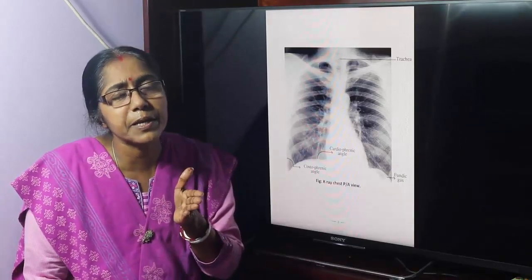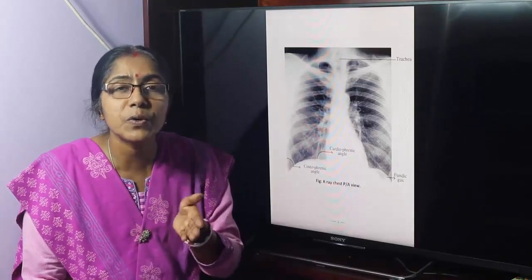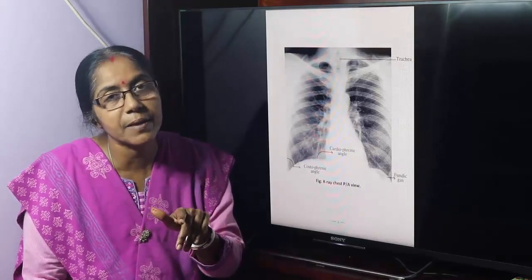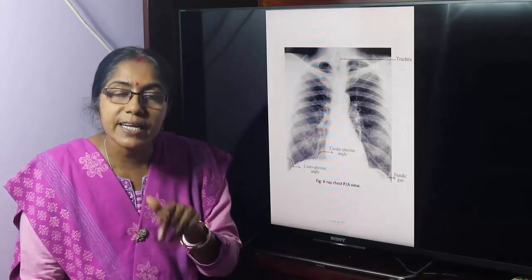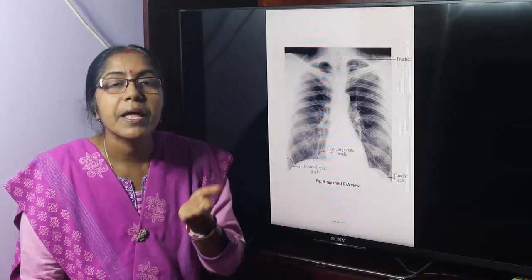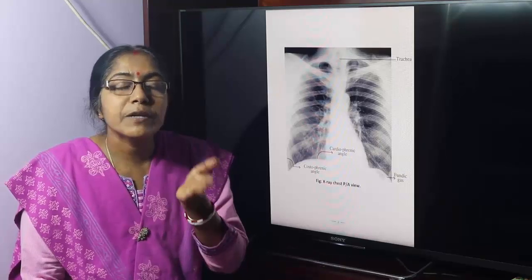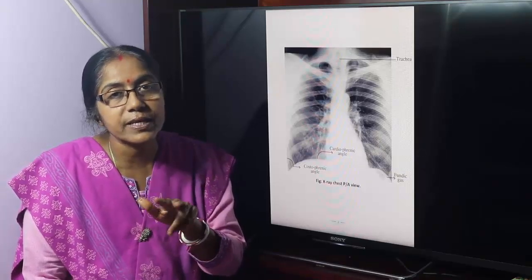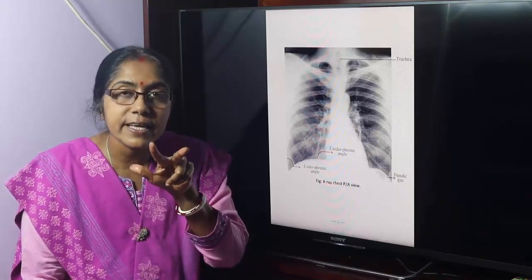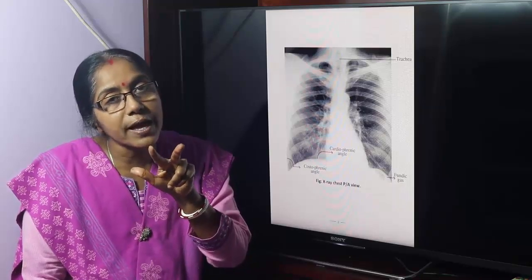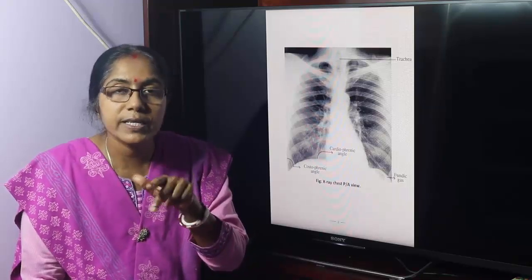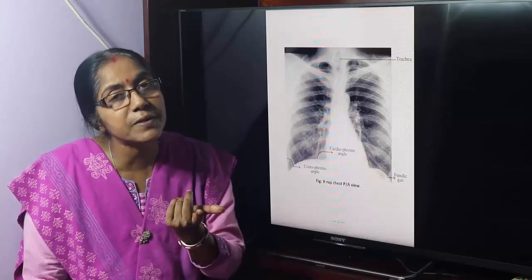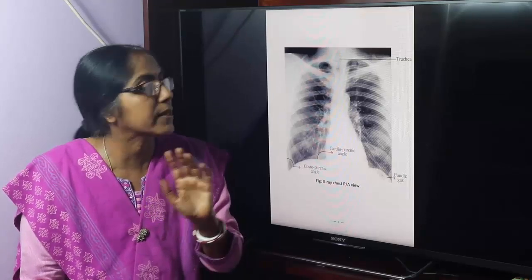The trachea lining epithelium is C-dose stratified ciliated columnar epithelium. Trachea has 15 to 16 C-shaped hyaline cartilages. The C is incomplete posteriorly. Posteriorly, the gap is filled by the tracheal muscles, which are smooth muscles.